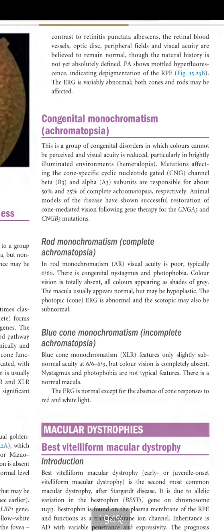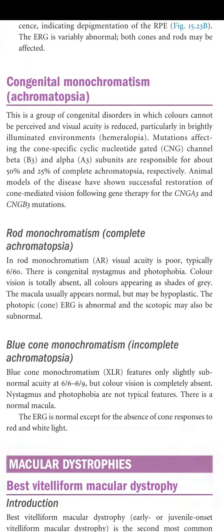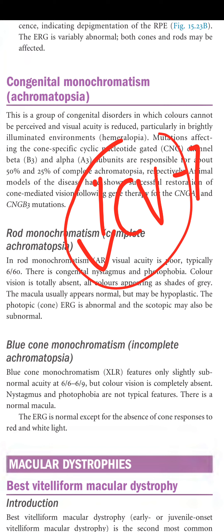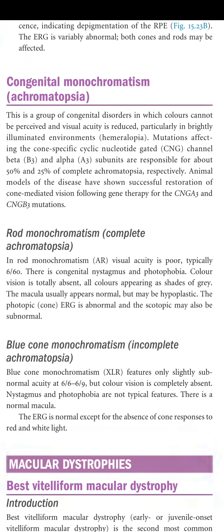Congenital monochromatism (achromatopsia) is a group of congenital disorders in which colors cannot be perceived, visual acuity is reduced, and there is hemeralopia (difficulty in brightly illuminated environments). Mutations affecting the cone-specific cyclic nucleotide-gated (CNG) channel beta-3 and alpha-3 subunits are responsible for about 50% and 25% of complete achromatopsia respectively. Animal models have shown successful restoration of cone-mediated vision following gene therapy for CNGA3 and CNGB3 mutations.